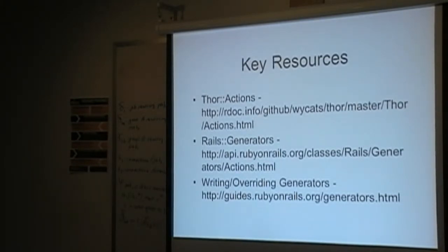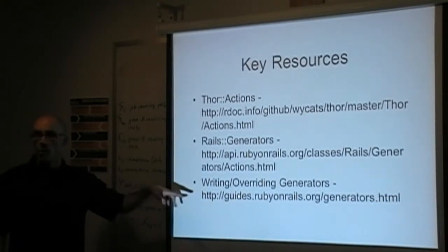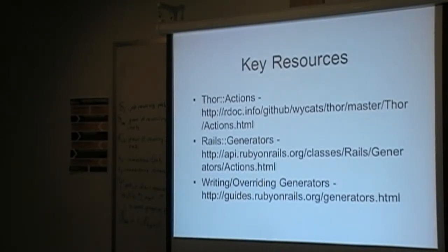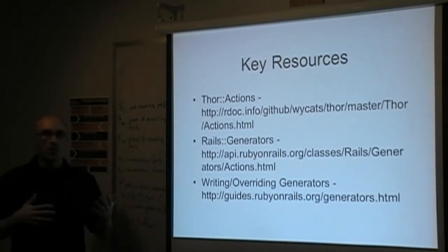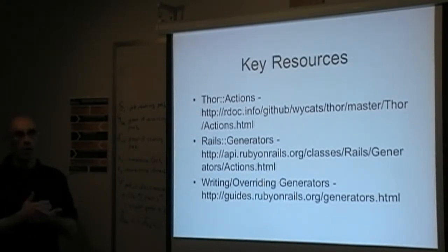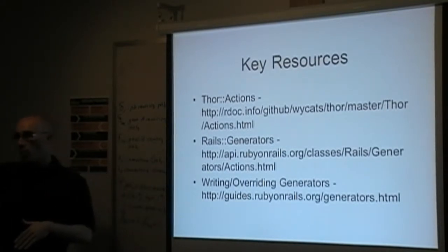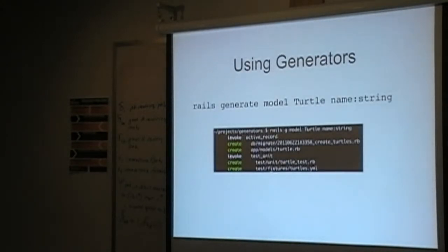A couple of key resources: whenever I sit down to write generators, there are a few pieces you need to understand. A really good source is the new generators guide — Rails 2 kind of lacked this and it was hard to figure out where to start, but this guide walks you through writing a Rails generator. The other two things you need are the core Thor actions — low-level functions like create file, delete file, build templates — and then the Rails generator classes which add Rails-specific stuff like running Capistrano on top of that.